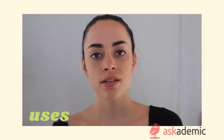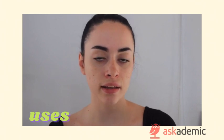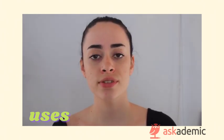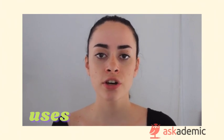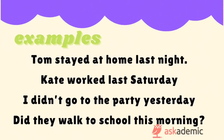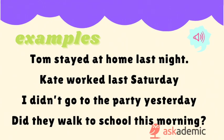The simple past is used to talk about things that started and ended in the past. Generally, we use it with adverbs of time like last year, yesterday, last night. Some examples: Tom stayed at home last night; Kate worked last Saturday; I didn't go to the party yesterday; did they walk to school this morning?